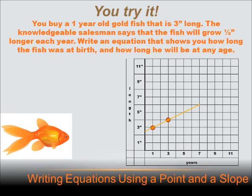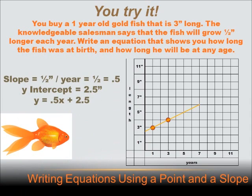So now I know the slope which is one-half inch per year or one inch per two years. And I know what the y-intercept is, two and a half inches. If I know those two bits of information I can create an equation. My slope is one-half or .5 and my y-intercept is 2.5. So my equation is y equals .5x plus 2.5.